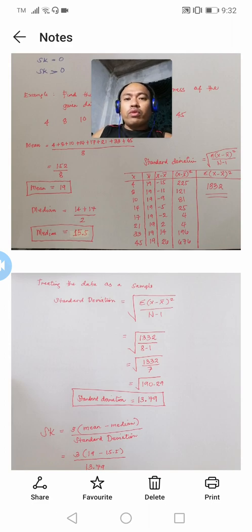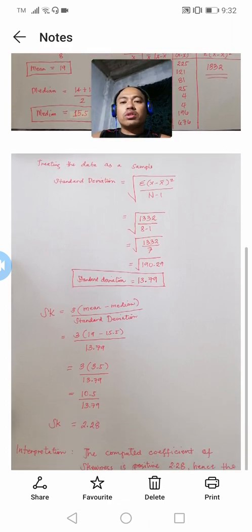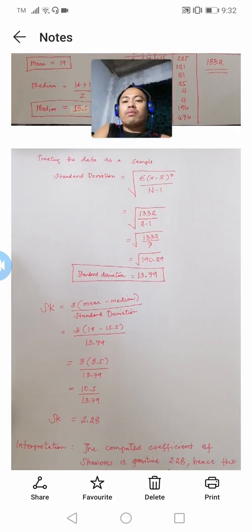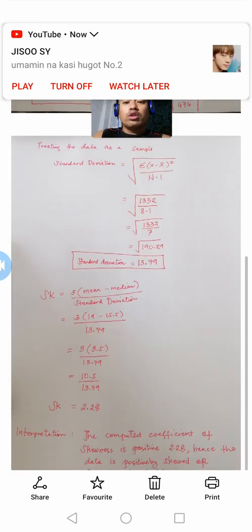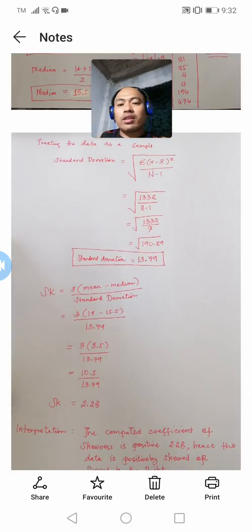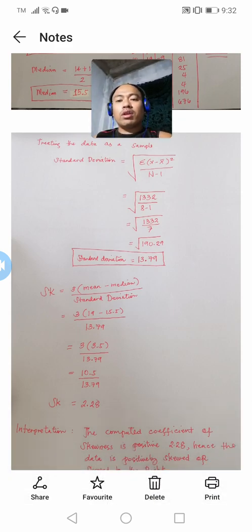After getting the squared differences, we get the sum, which is the numerator of the standard deviation formula — the summation of (x minus x-bar) squared. Divided by n minus 1, and since n is 8, we subtract 8 by 1 to get 7. The sum of the squared differences is 1,332. Dividing by 7 gives 190.29, and taking the square root gives a standard deviation of 13.79.